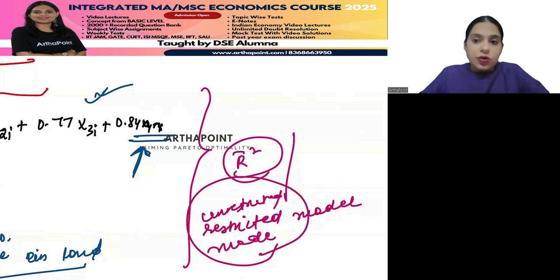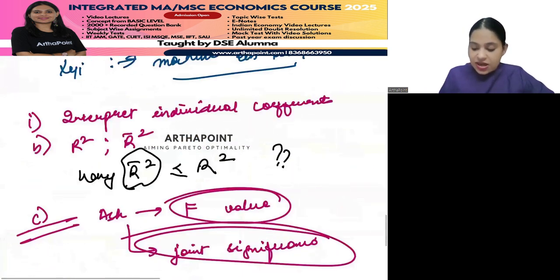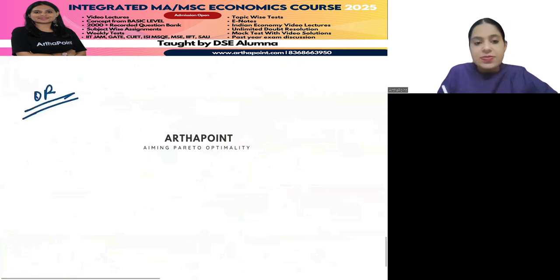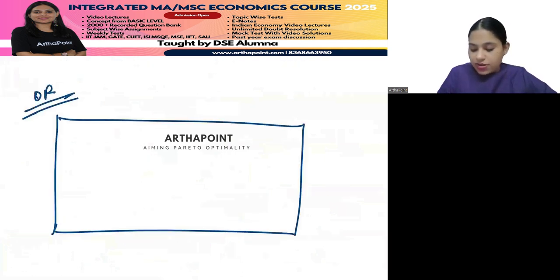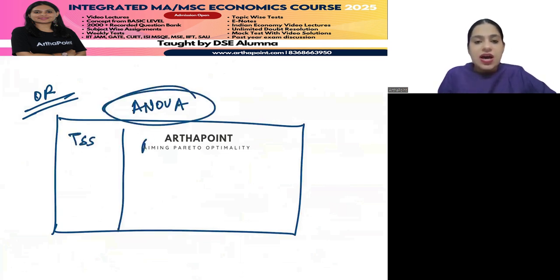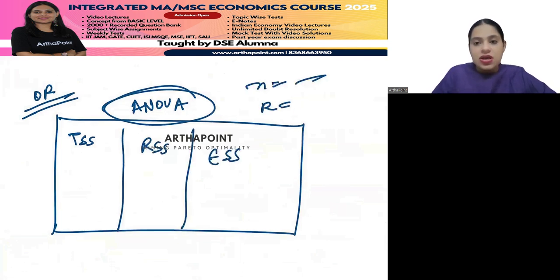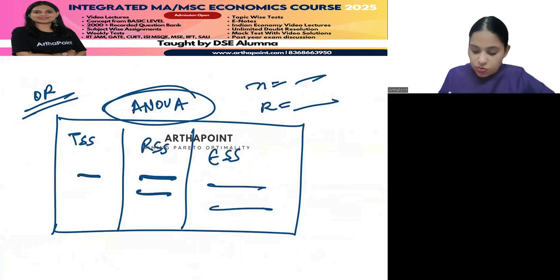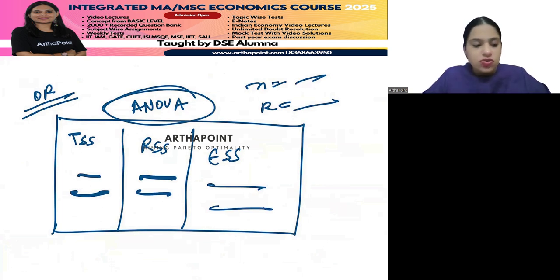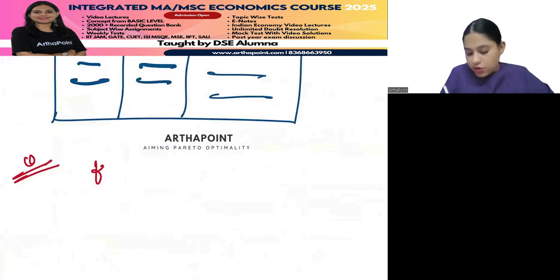This kind of question can be asked in the exam and you have to be very thorough with it. Another kind of question that can be asked is when they give you an ANOVA table with TSS, RSS, ESS, sample size, number of parameters, and ask you to fill in the blanks, find the F-value, and check joint significance.